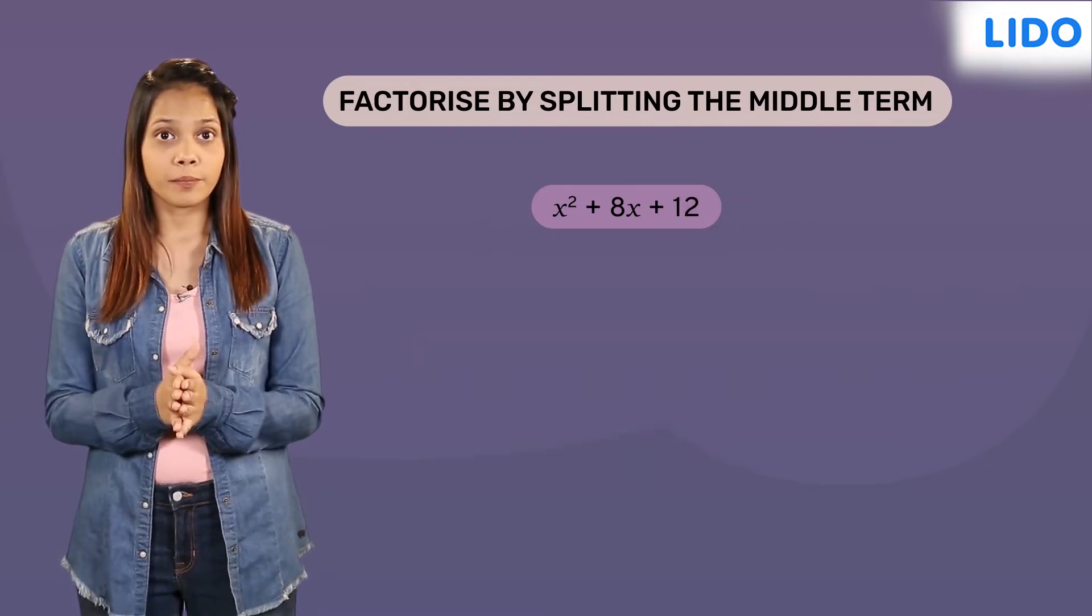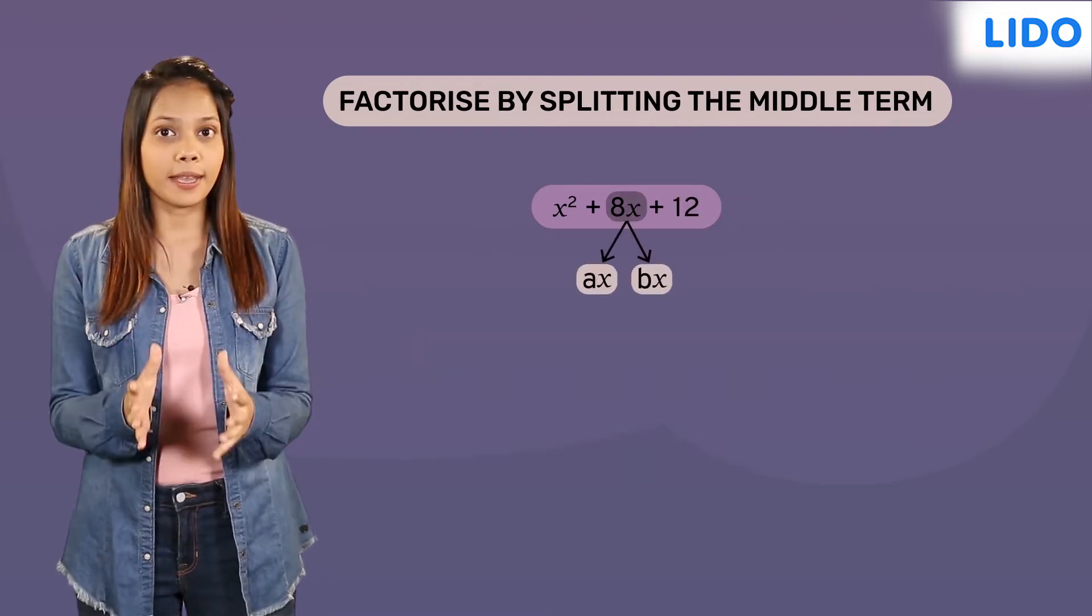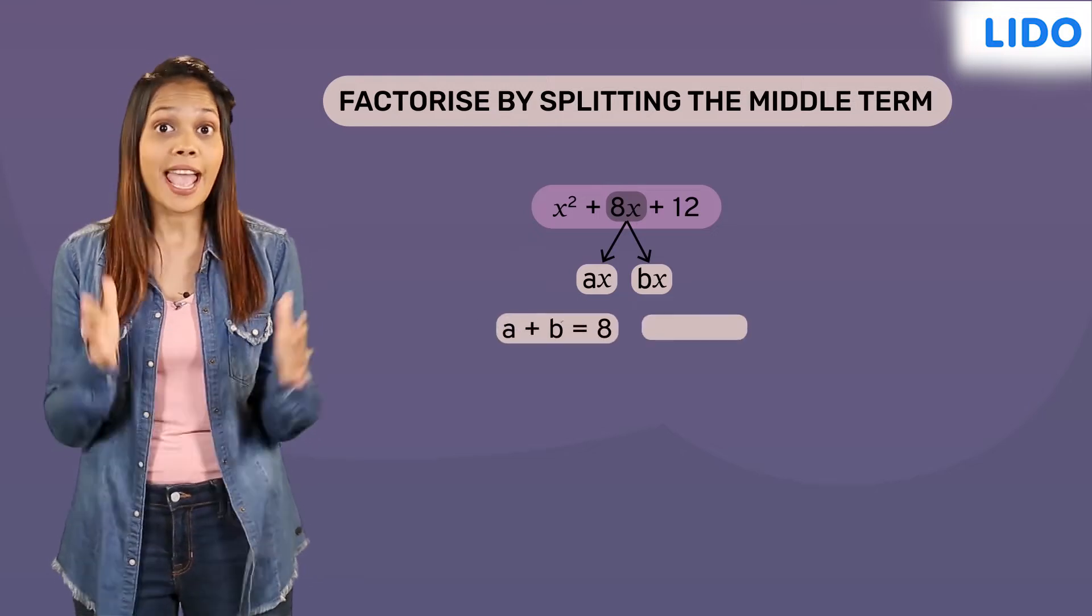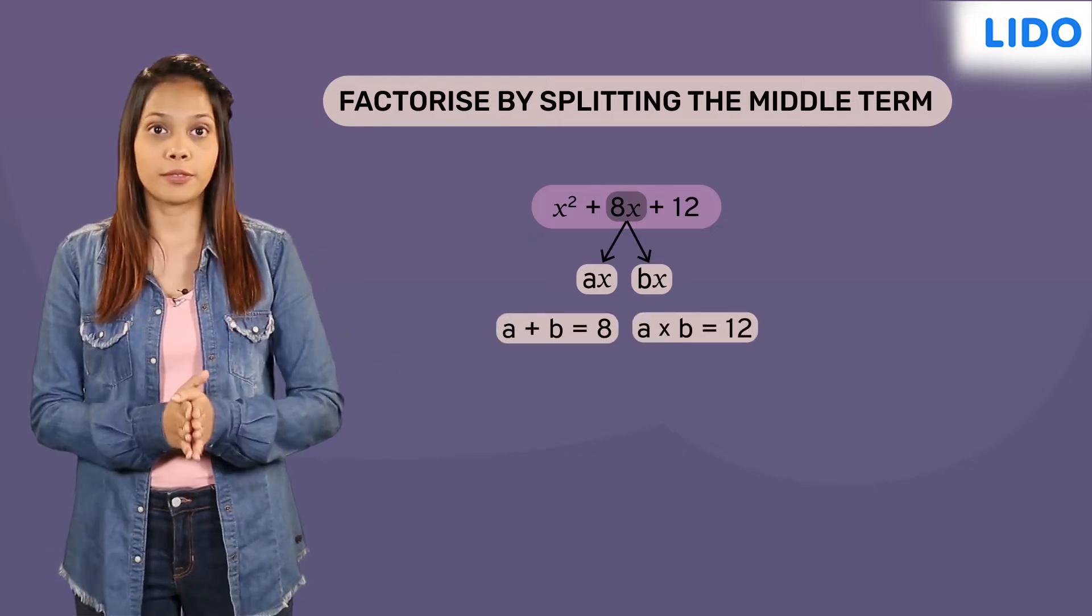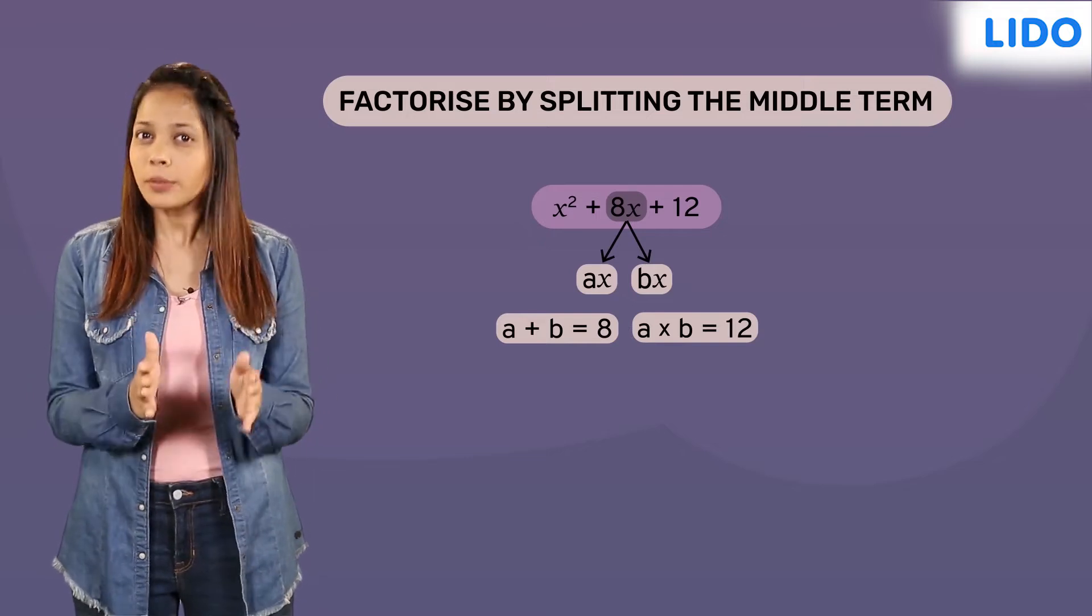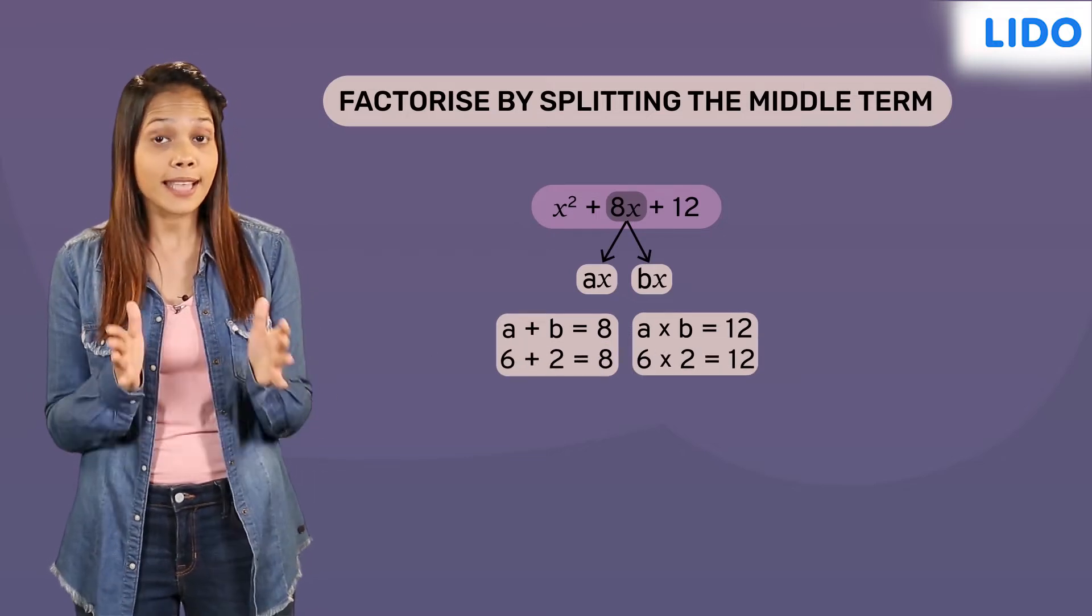For the given expression, we have to find a and b such that a plus b is equal to 8 and a times b equals 12. Now, the numbers that satisfy both these conditions are 6 and 2.